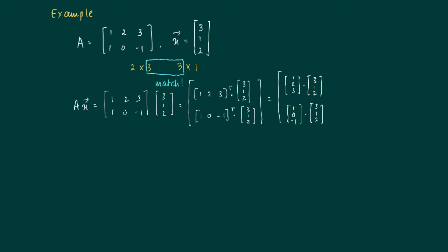So what we obtain is the following. 1 times 3 plus 2 times 1 plus 3 times 2. The second component equals 1 times 3 plus 0 times 1 plus minus 1 times 2 which equals 11, 1.